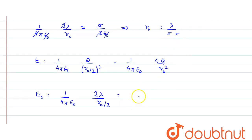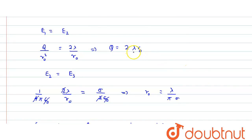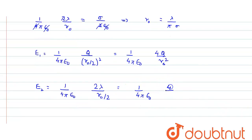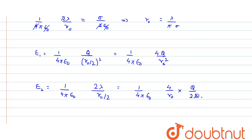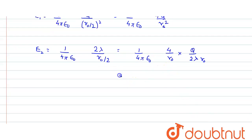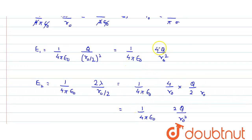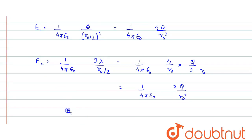Substituting the value of lambda in terms of Q — since Q equals 2 lambda r₀, lambda equals Q divided by 2r₀ — we get E2 at r₀/2 equals (1/4πε) times 2Q divided by r₀². Comparing the two expressions, E1 equals 2 times E2 at r₀/2, since the only difference is the factor of 2.